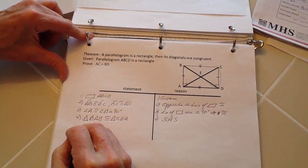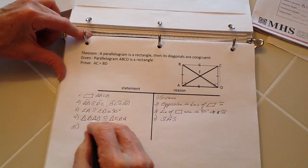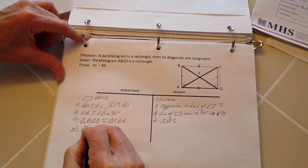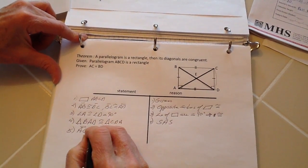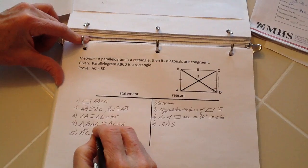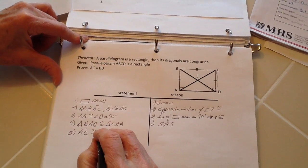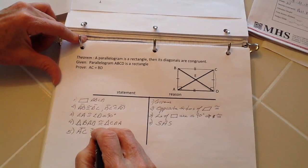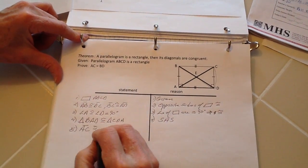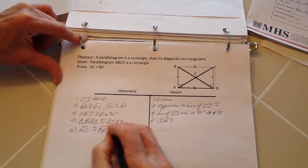And then step number five: I've already proven that, so segment AC is congruent to segment BD.